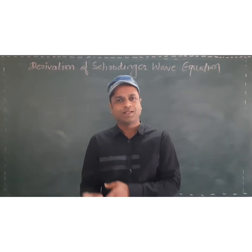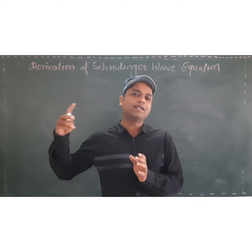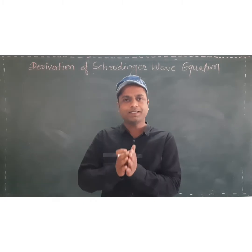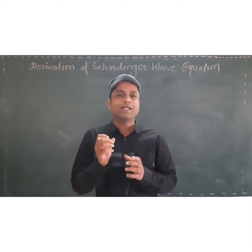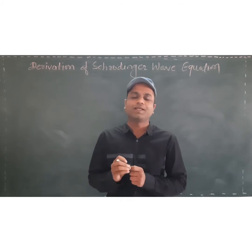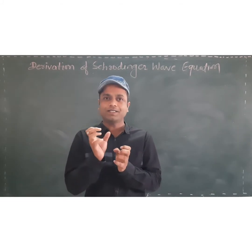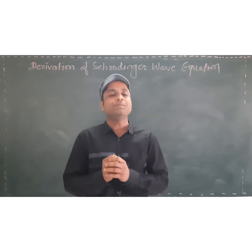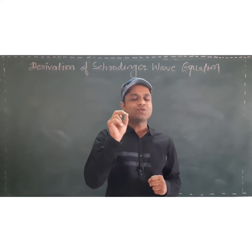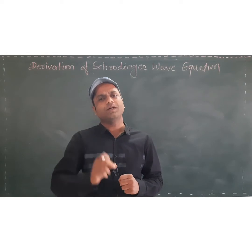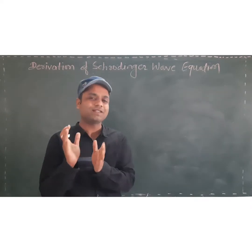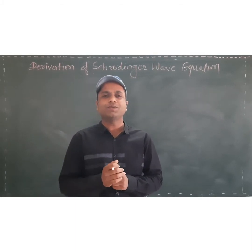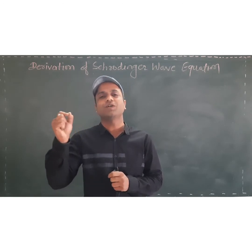Derivation of Schrödinger wave equation. Earlier scientists were confused about how an electron is behaving — whether it is a particle or it is a wave. But after de Broglie's suggestion, it has a dual nature. When mass is very less, the wave character is more, and when mass is more, the particle character is more. So, electron has very less mass and hence shows more wave character. Therefore, Schrödinger tried to derive an equation for the electron.